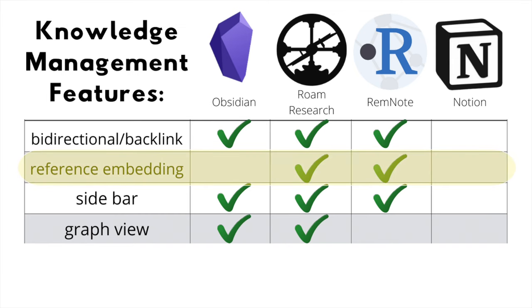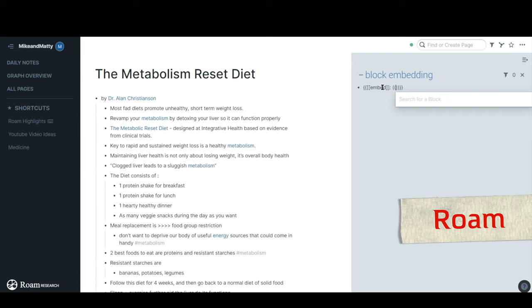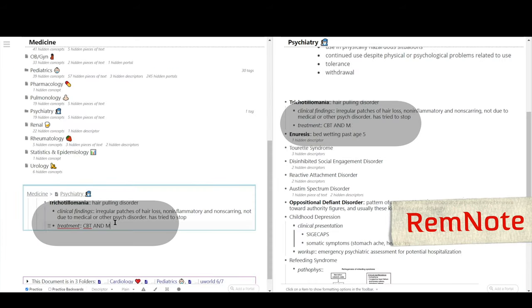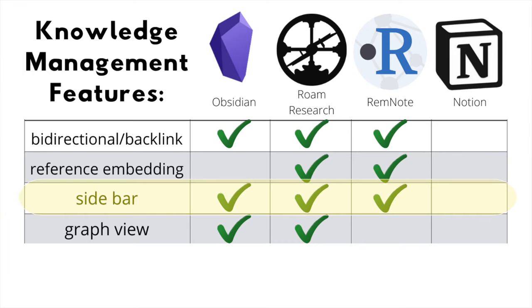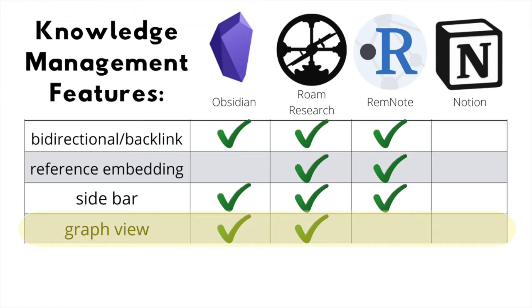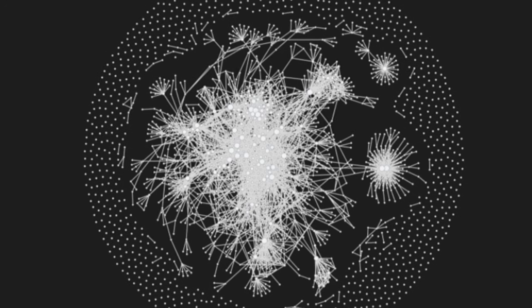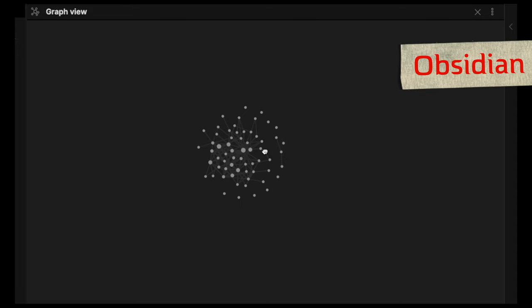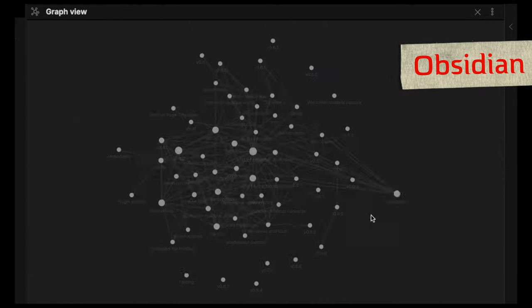Reference embedding allows you to pull prior notes into your current document, and any edits you make will be updated in both locations. Roam achieves this with its sidebar editor, and RemNote does this through its use of portals. The sidebars allow you to edit multiple documents simultaneously, further encouraging you to link your ideas. Roam's sidebar has the most functionality, allowing you to embed, filter, and cue your ideas. Finally, the graph view allows you to visualize your knowledge and see how all your ideas and documents are linked together — showing what your metaphorical second brain could look like. Obsidian and Roam both have graph views, but in our opinion Obsidian's graph is more visually appealing as it has more dimensions and is more interactive.